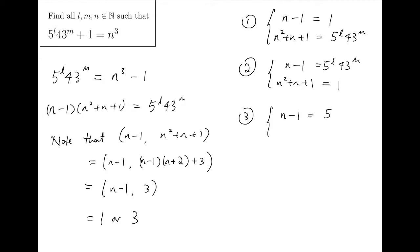Or, the other two cases is that N minus 1 will take all the prime factors of 5, while N squared plus N plus 1 will take all factors of 43. And finally, the other way around, N minus 1 taking all the factors of 43, and N squared plus N plus 1 will take all factors of 5.